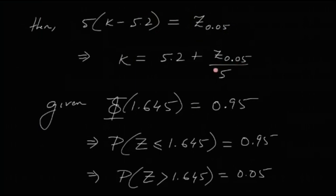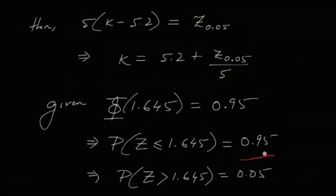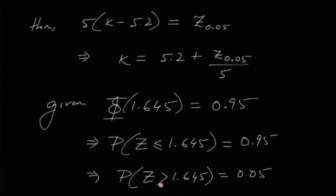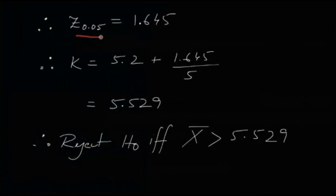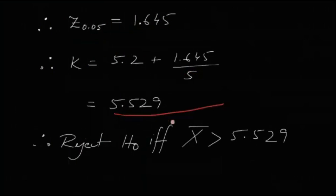The value of z_0.05 can be found from the normal table; it is given in the question paper as Phi(1.645) = 0.95, meaning P(Z ≤ 1.645) = 0.95, so P(Z > 1.645) = 0.05. Therefore z_0.05 = 1.645, and k = 5.2 + 1.645/5 = 5.529. So we reject H0 if and only if x-bar > 5.529.